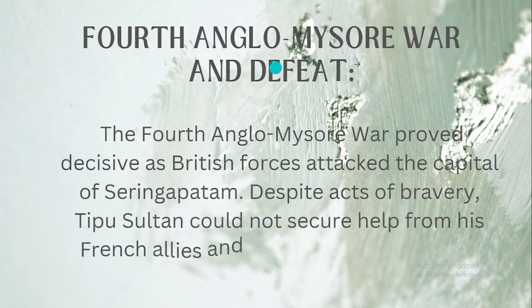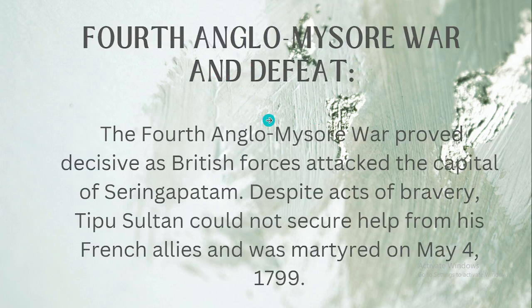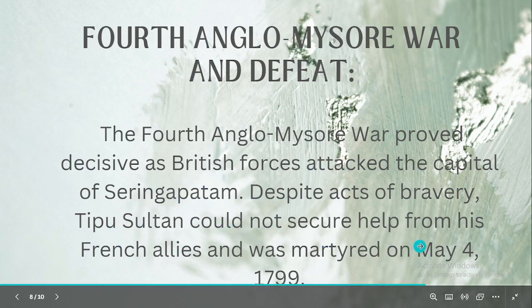The Fourth Anglo-Mysore War and Defeat. The Fourth Anglo-Mysore War proved decisive as British forces attacked the capital of Seringapatam. Despite acts of bravery, Tipu Sultan could not secure help from his French allies and was martyred on May 4th, 1799.